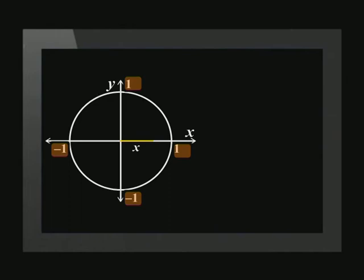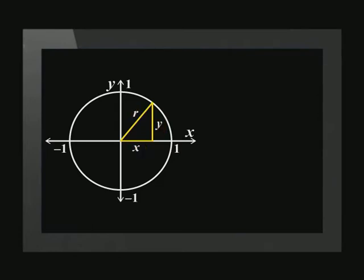Let's show that this identity is true through the unit circle. The unit circle has a radius of 1 unit. Let's draw a triangle by joining the radius to the x-axis and labelling the sides x, y, and r. We've put the triangle in the first quadrant, but we could have constructed it anywhere. The angle between the x-axis and the terminal arm is theta.